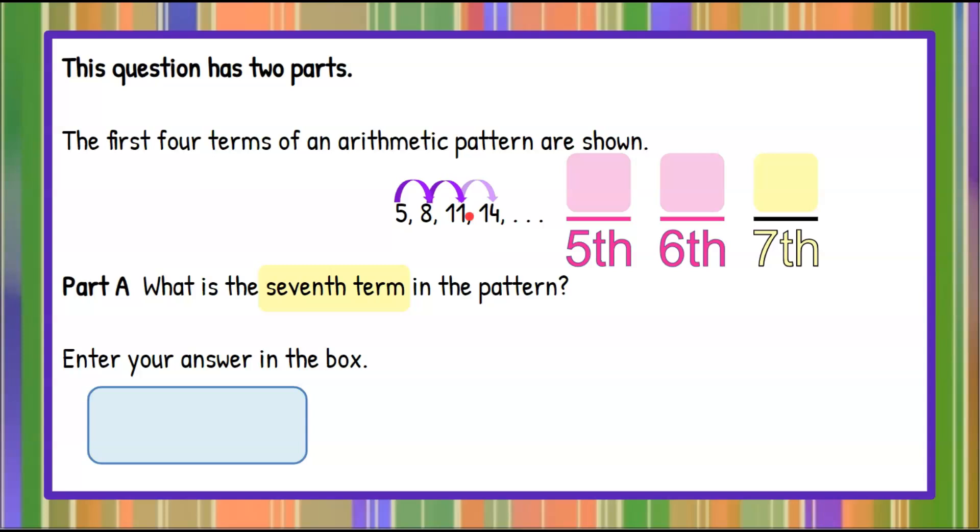8 plus 3 was 11 and 11 plus 3 was 14. So I can see that my rule here is to add 3 to get to the next term. So now we can continue that.